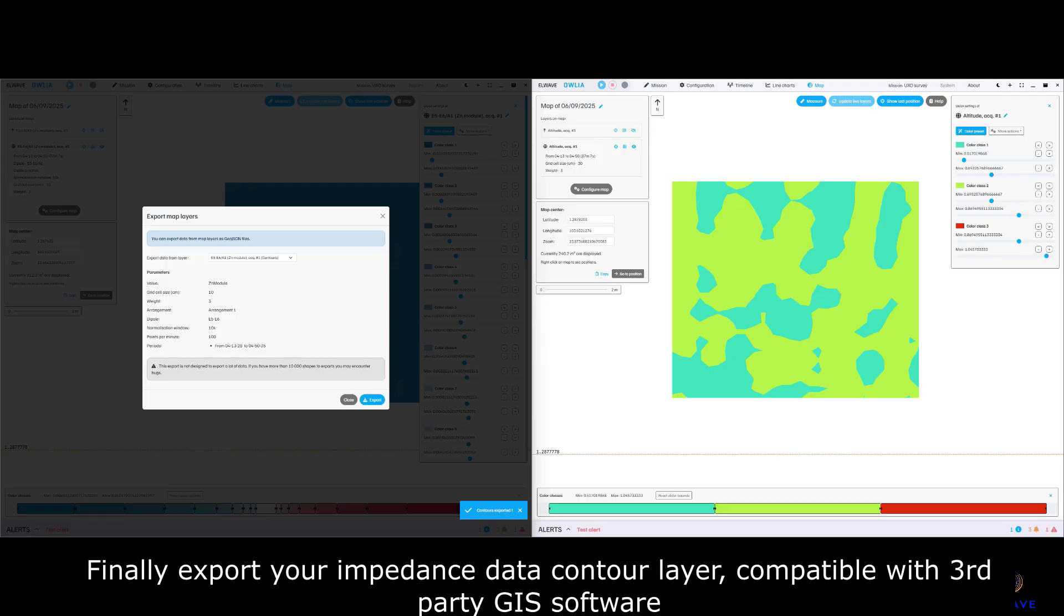Finally, export your impedance data contour layer, compatible with third-party GIS software. Thank you for watching.